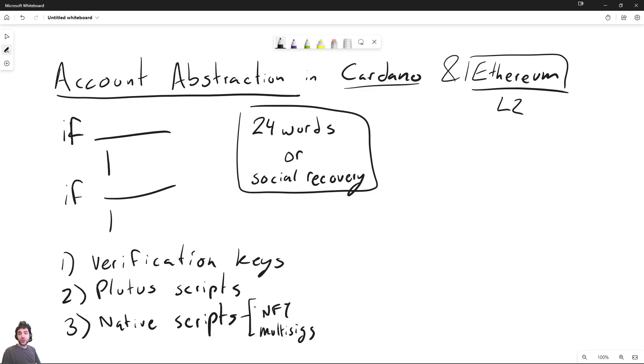The difference between Plutus scripts and native scripts is that native scripts are very simple. They can only have a very small amount of functionality. So for example, they allow saying require signature. So require verification key, I'll just call this VKey for short. So they can require VKey, they can require M of N.